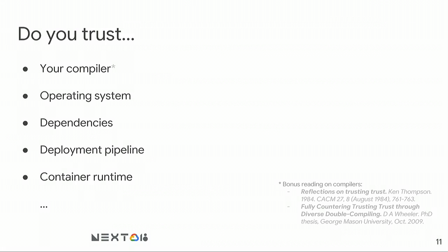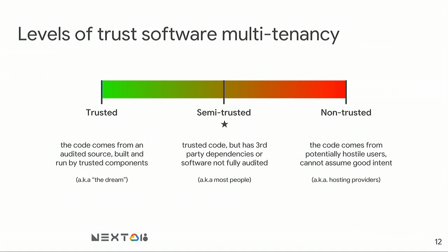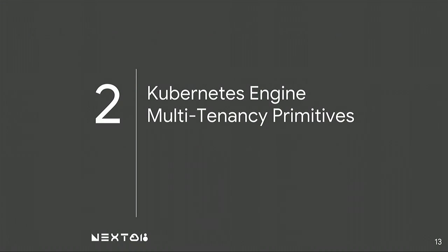There are also container runtimes like Docker or Containerd. Do you actually trust these runtimes? It's not a binary choice — you're probably somewhere on a spectrum. We classify levels of software multi-tenancy as trusted, semi-trusted, and non-trusted. In the trusted case, everything comes from an audited source repository, the compiler is trusted, and even some hardware is trusted. Most of us are in the semi-trusted range, where we have some trusted components we rely on and build our security models around.